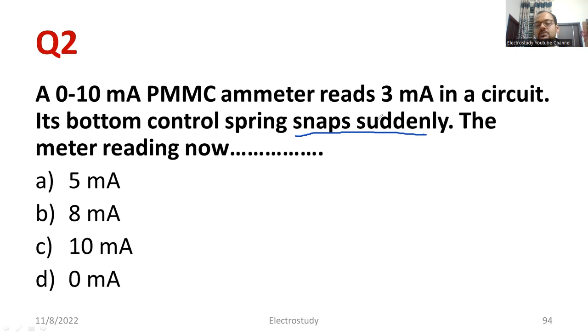If the bottom spring snaps down suddenly, the controlling torque is becoming zero. Though the deflection torque is available there, the meter will not give the proper deflection. Therefore, the meter reading becomes absolutely zero. Because when the pointer stops, the deflecting torque is equal to controlling torque. That point you must have known. So by the way, the right answer is 0 milliampere. The meter did not give any reading in this context. These kind of questions can be expected. Please read it carefully.